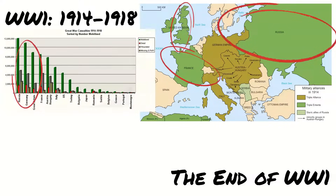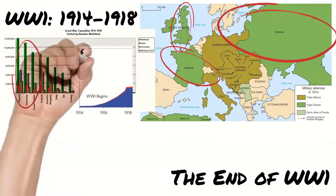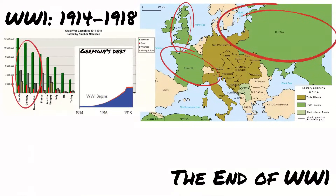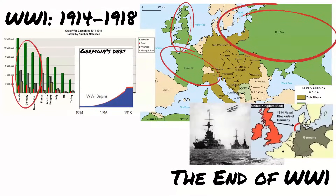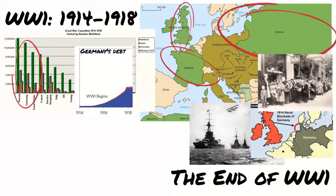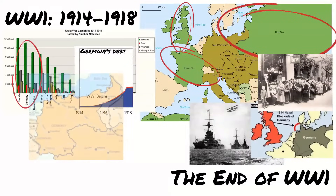The war was extremely expensive for all sides but for the Germans it caused spiralling debt, which by 1918 was three times the debt they had in 1914. In 1918 the British navy blocked German trade routes, which prevented German supply ships from delivering food to the ports. This led to severe food shortages and it is estimated that 750,000 people died from hunger as a result.